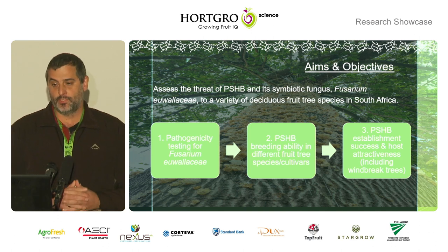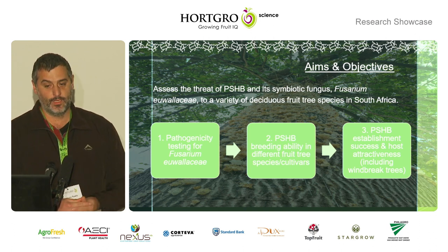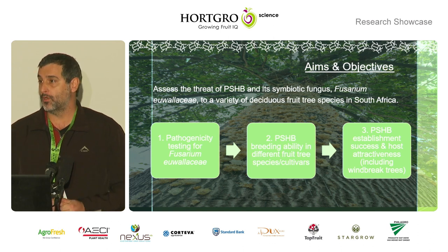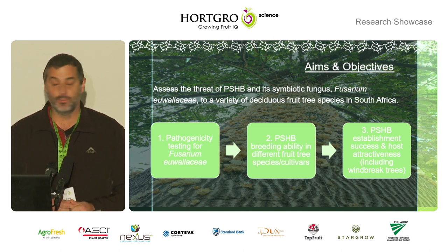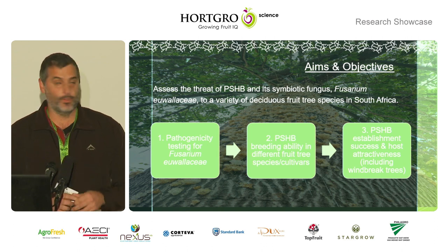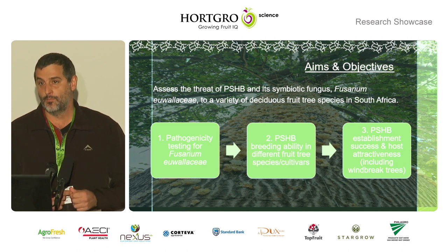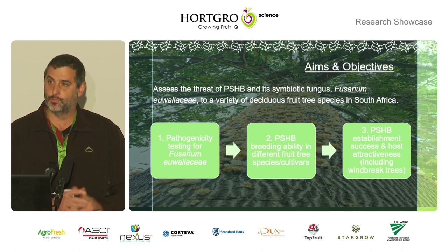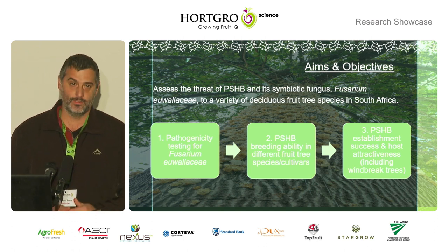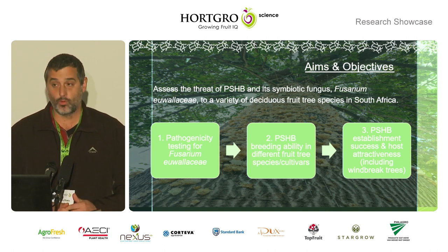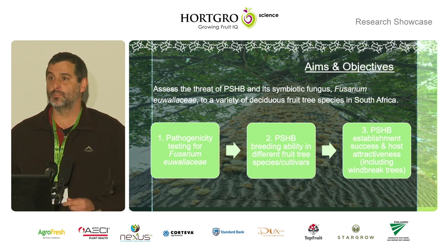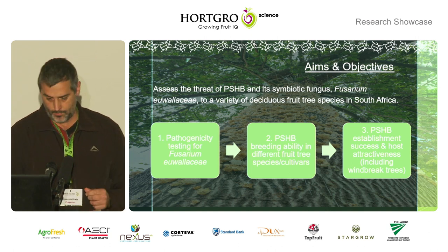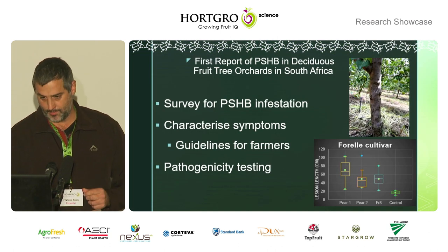For this particular study, the aims and objectives: firstly, we need to find out what host trees are actually susceptible to both the beetle and the fungus. The first thing we'd do is a pathogenicity screening of a large number of host tree species — fruit tree species — but also the different varieties or cultivars of these fruit tree species, to see if there's some sort of inherent method halting the susceptibility.